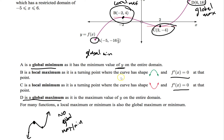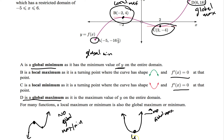Sometimes the global max and min could also be the local min. If I give you a parabola, it has no global max, but it does have a local max which is also the global min. In that case, it's both.